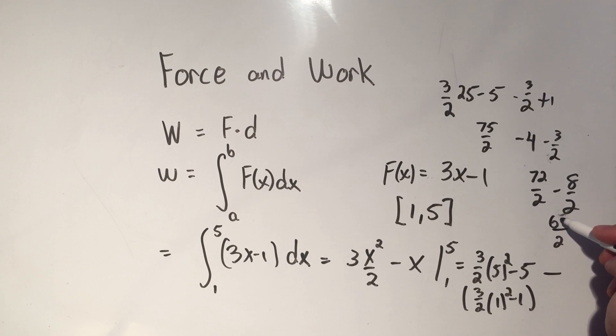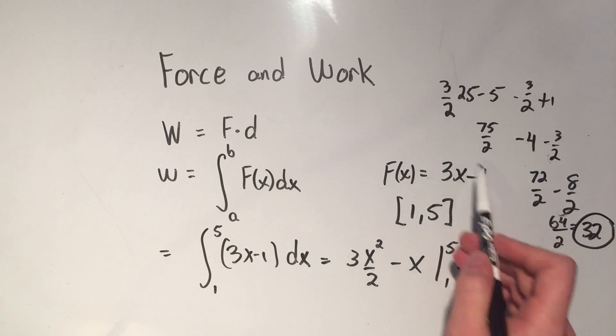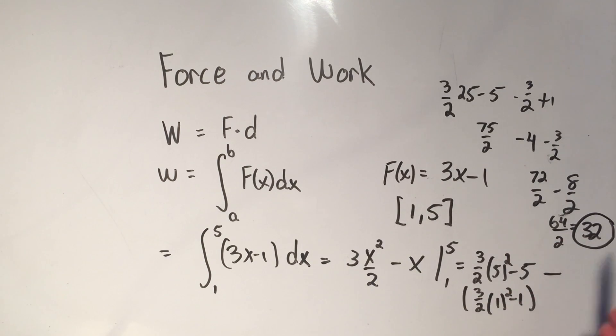That's going to be 64 over 2 is 32. So the amount of work that you've done by using this force function over this interval is 32 units of work, whatever units you're using.